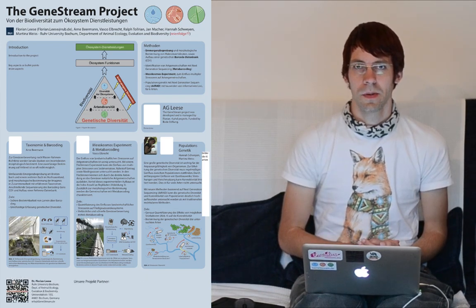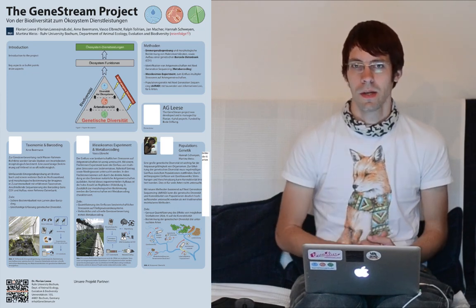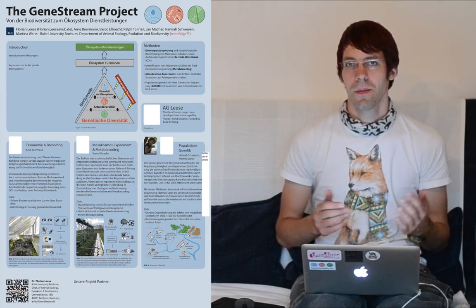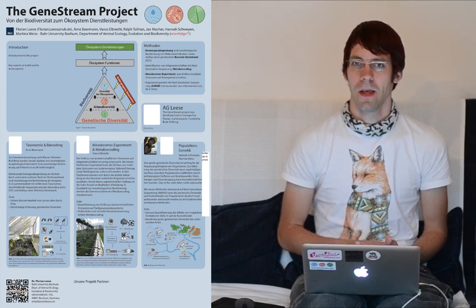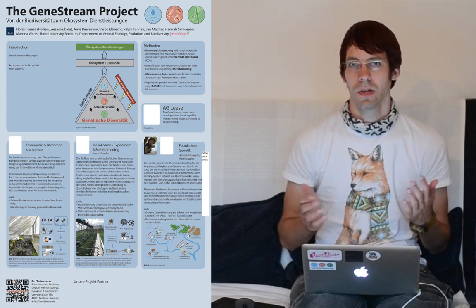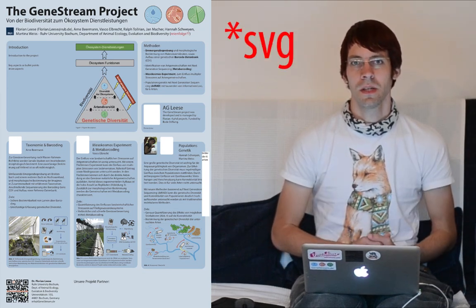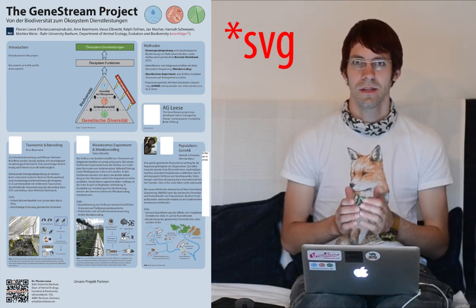This next version of the poster includes a little QR code down below — this is a basic link to our website, genestream.de. You can make those with simple QR code generators; I will put a link in the YouTube description to the one I used. I would recommend using one which has an SVG output format, so your QR code is vector based. You can edit it in Illustrator and then place an Illustrator file onto your poster in InDesign.